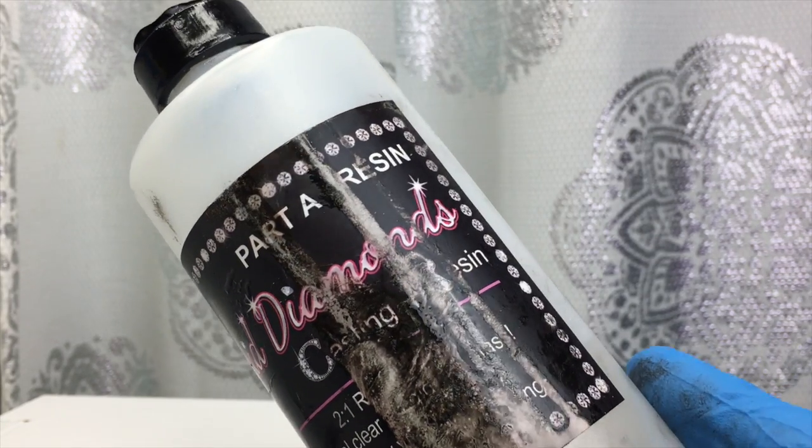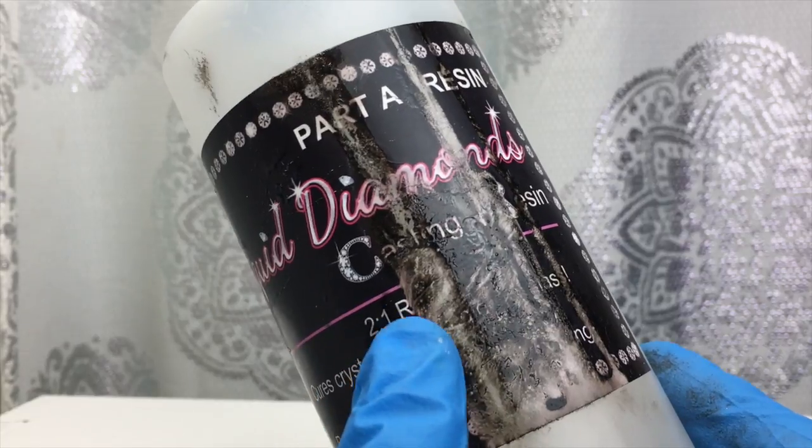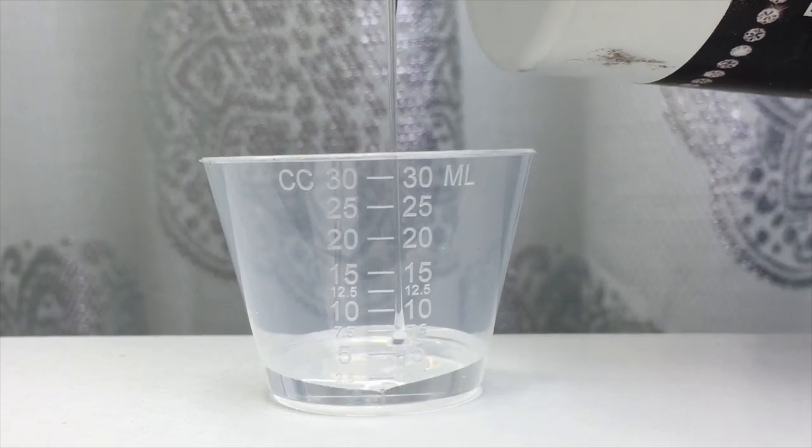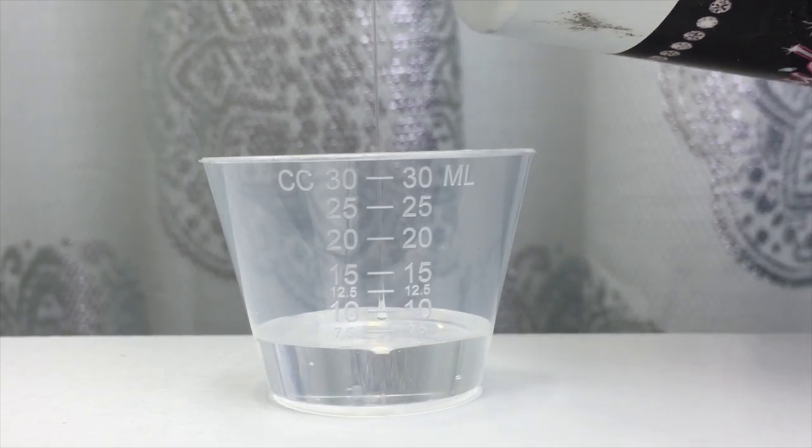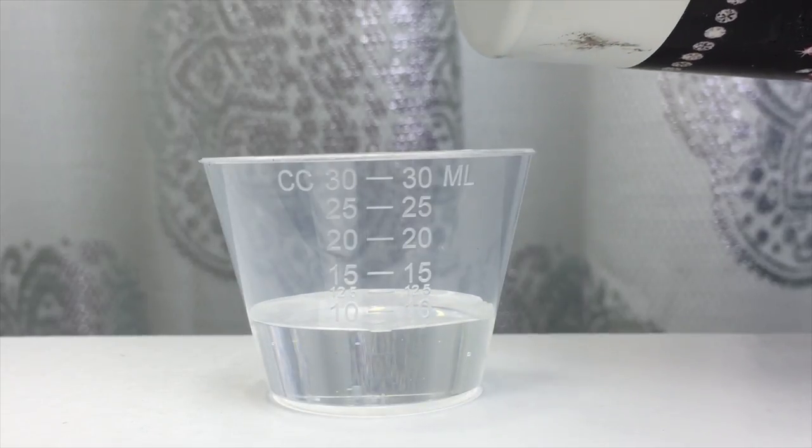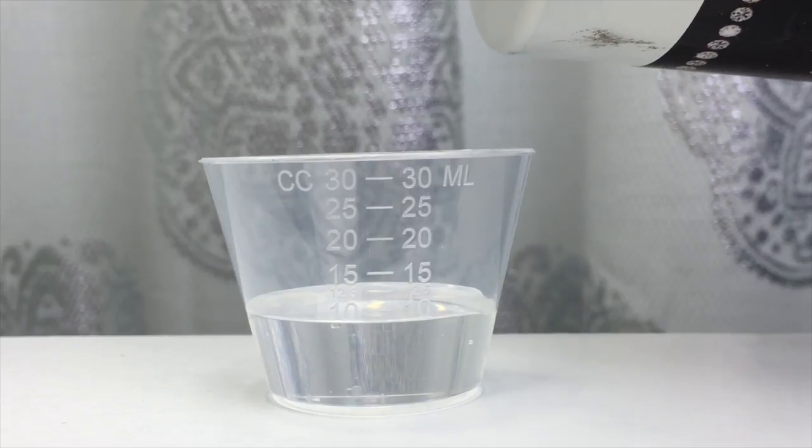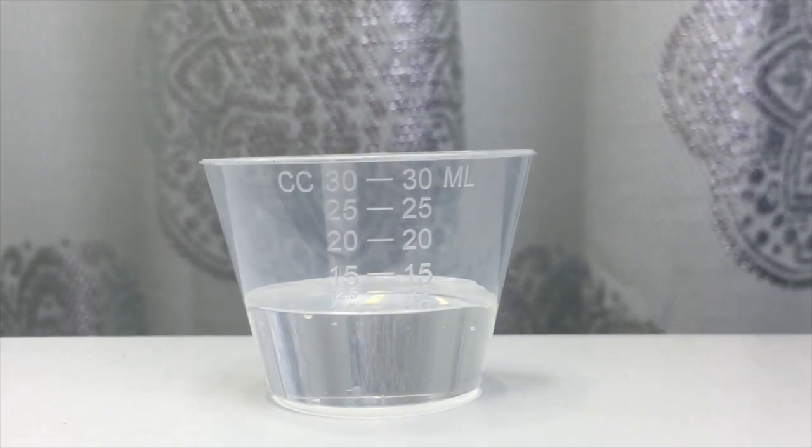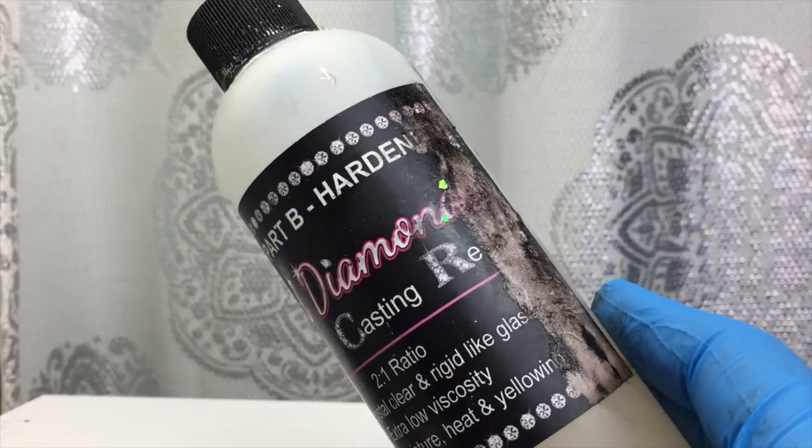Now I'm going to get started on mixing my two to one ratio resin so I'm going to do two parts resin so I'm going to pour 10 milliliters of resin and then for the hardener I'm going to put one part hardener so I'm only going to pour in five milliliters of that.